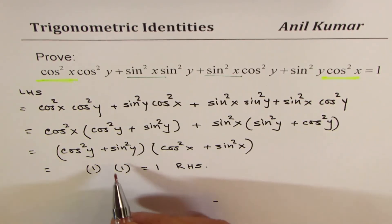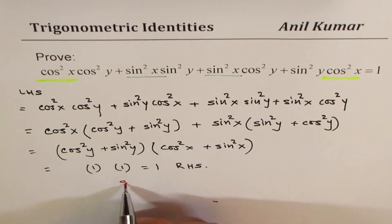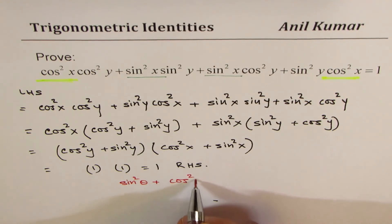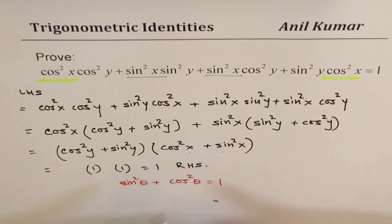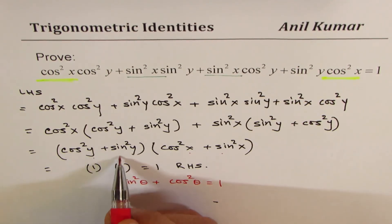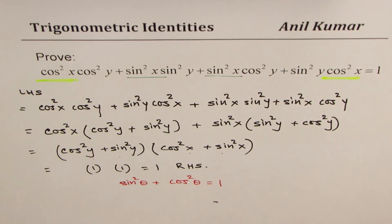We have used the Pythagorean identity, which is sin²θ + cos²θ = 1. Now, if theta is x, we get this term to be 1. If theta is y, that term is also 1. So that is how you could prove this identity.